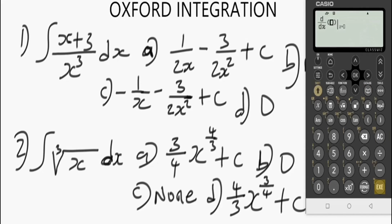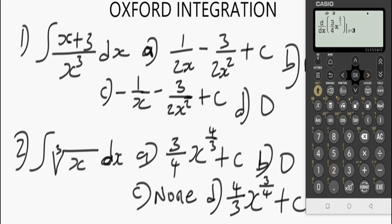We need to differentiate the options — whichever gives us 1.25 will be the answer. Press catalog, function analysis, press execute for the derivative. Let's begin with option A: use the fraction button, enter (3/4)x to the power (4/3). The brackets are balanced. Set it at x = 2 and press execute — we get 1.25. So the correct option is option A for this question. It's as simple as this!